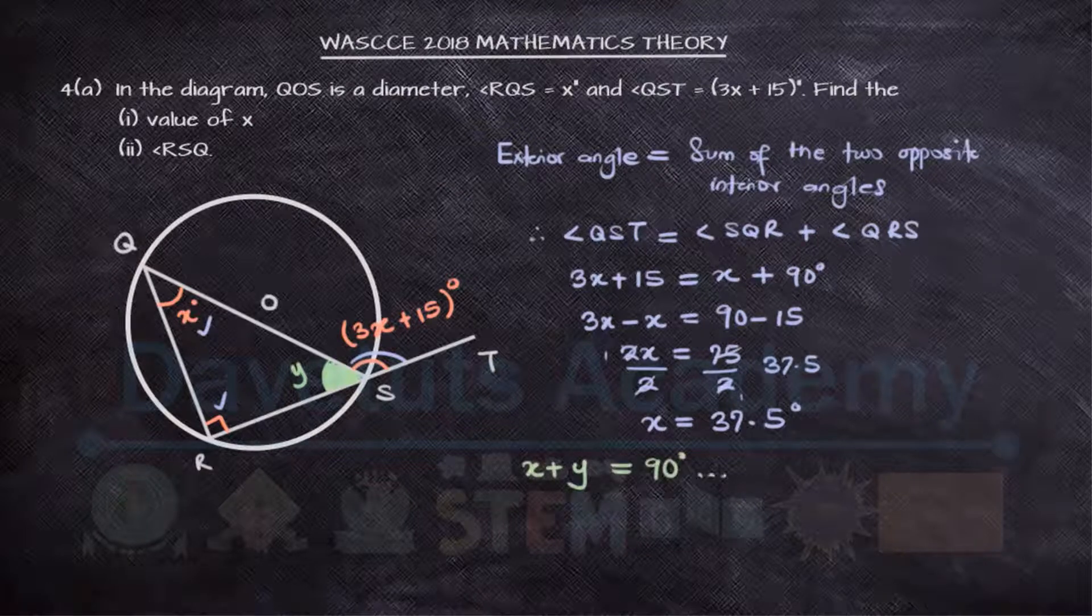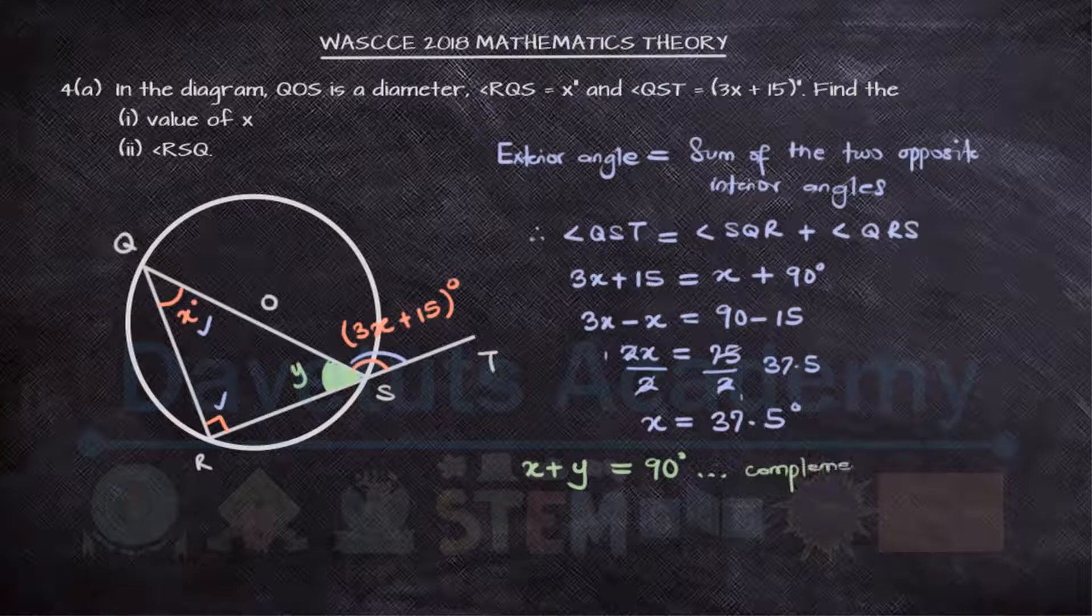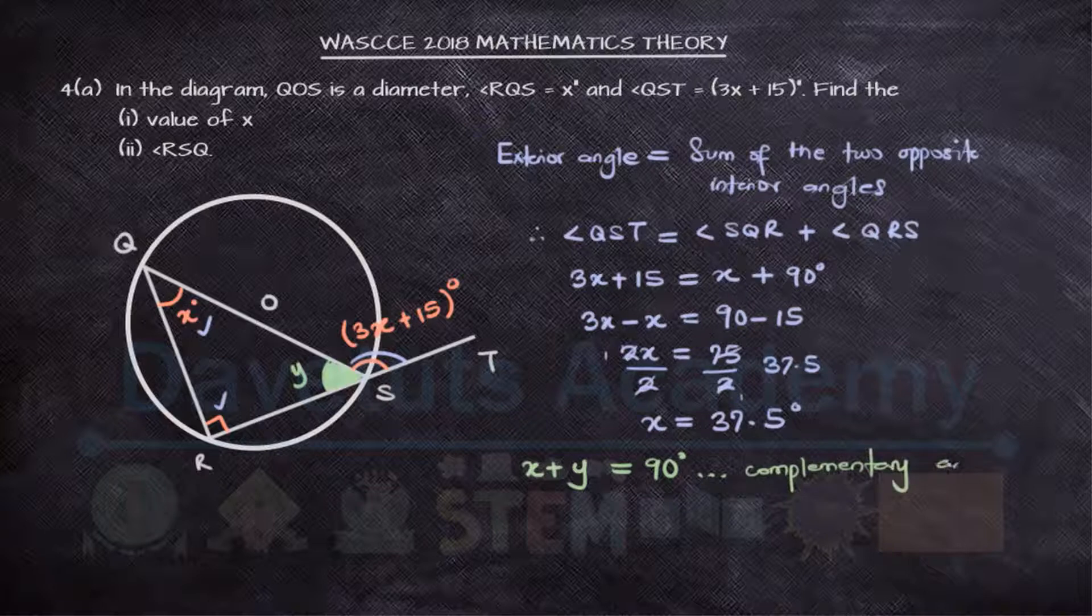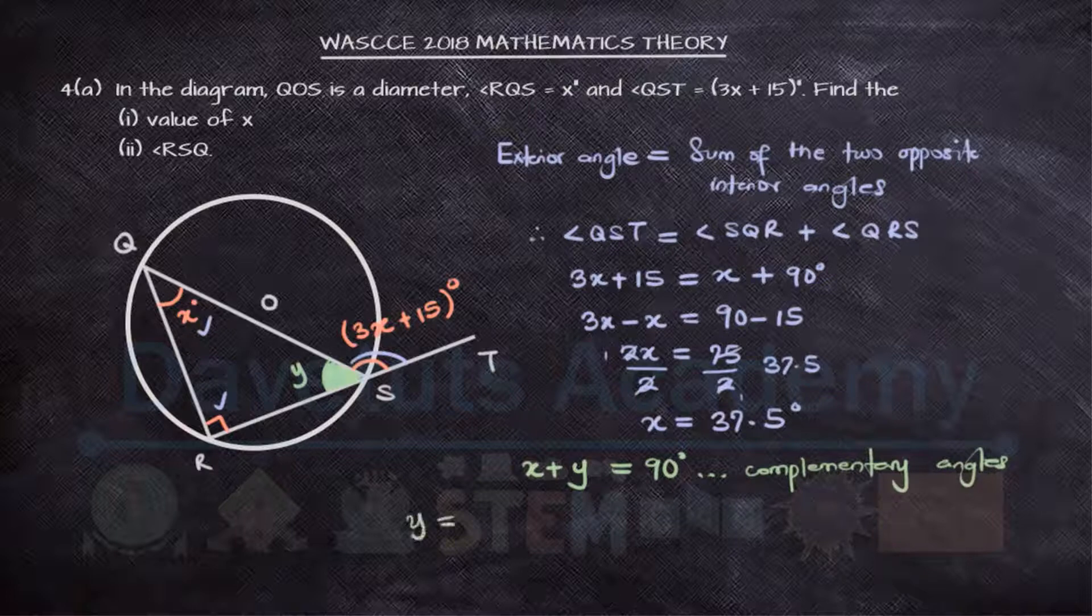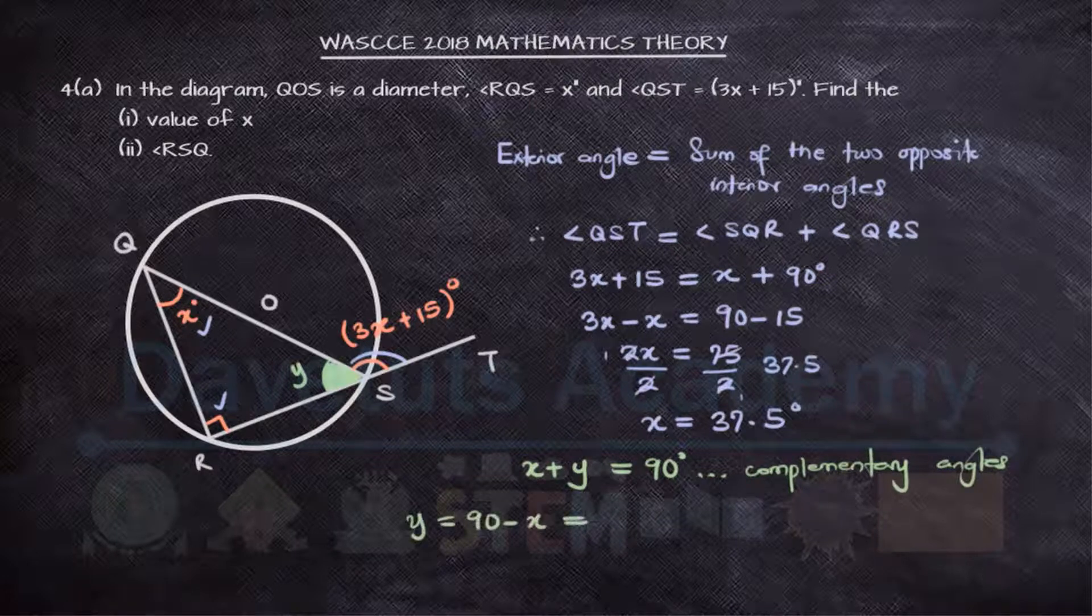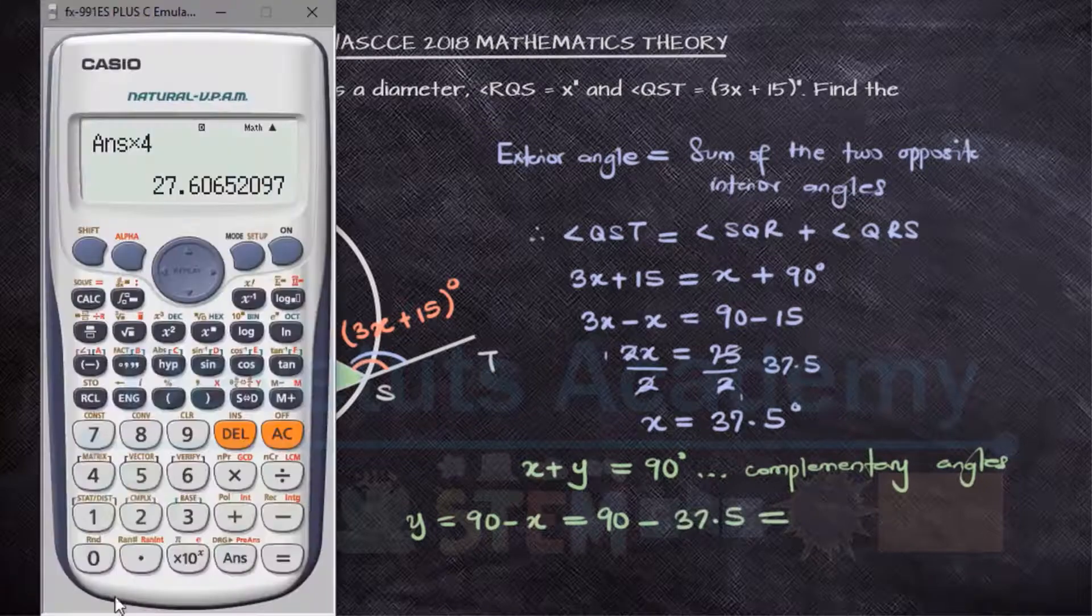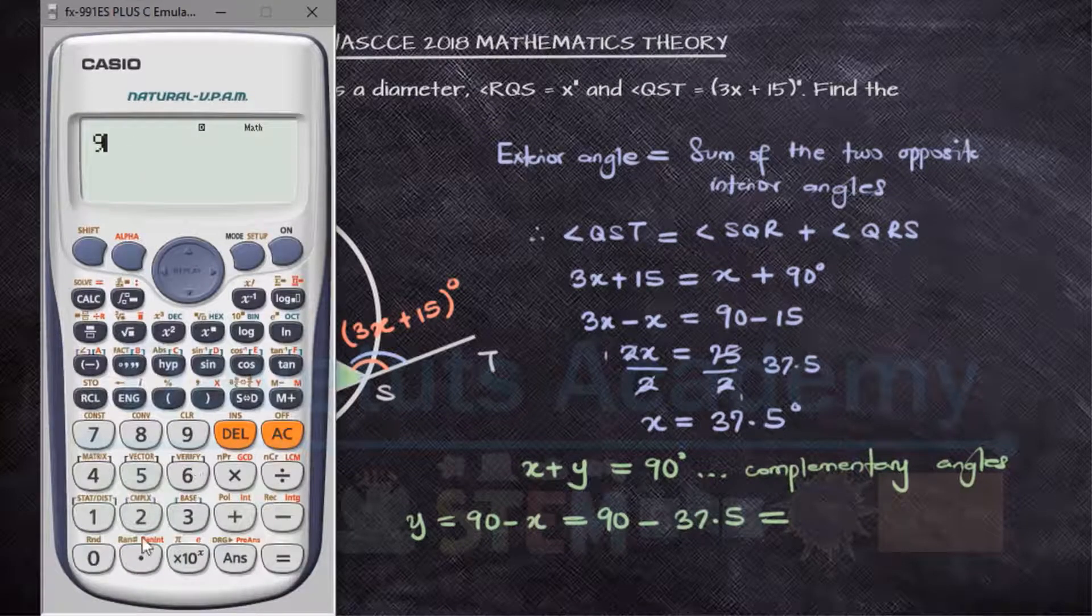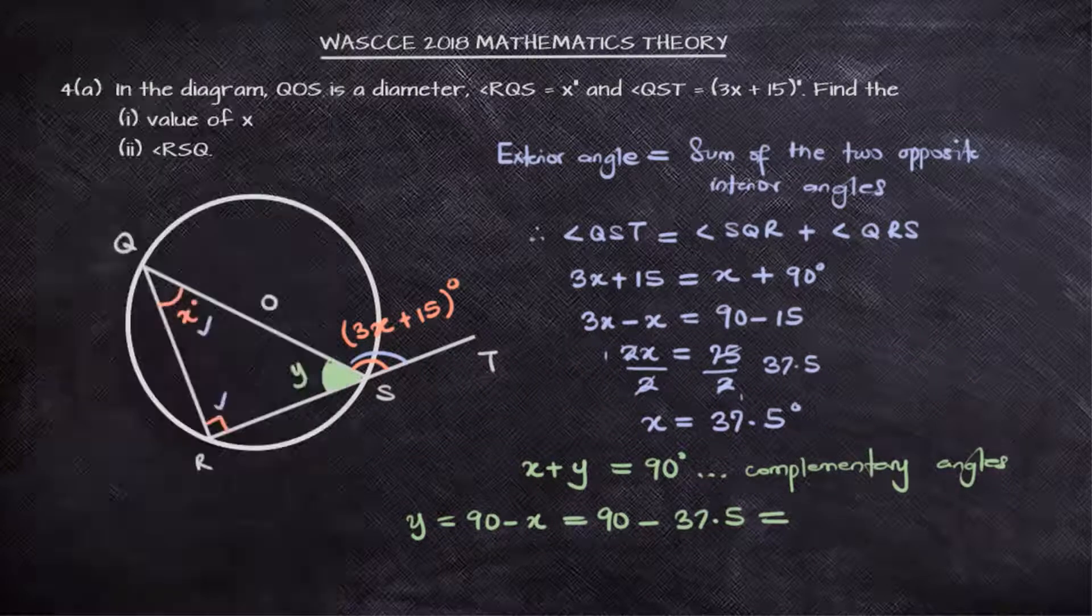Y is because they are complementary angles. They are complementary because they are the two other angles of a right-angled triangle. One angle is 90 already, so the other two will add up to 90. So that means Y will be 90 minus X, which is 90 minus 37.5, and that will give us 52.5 degrees.